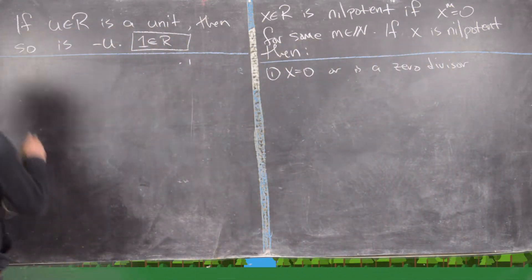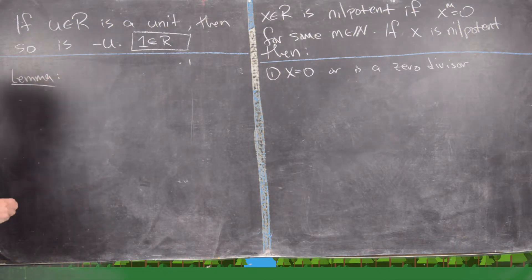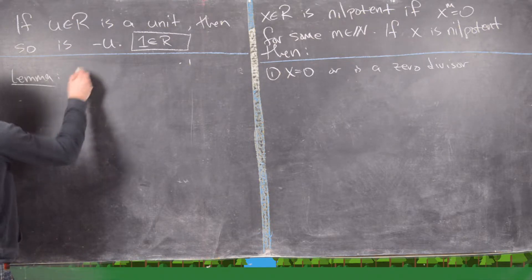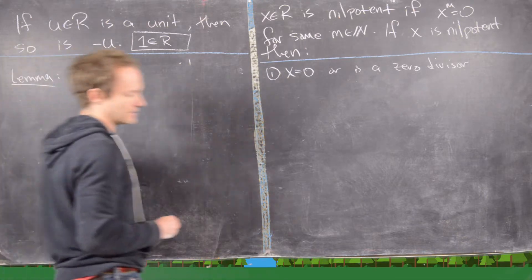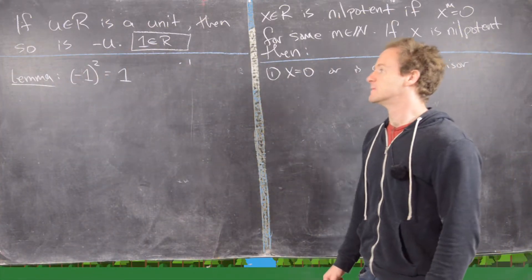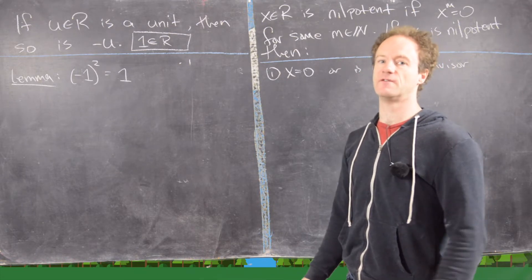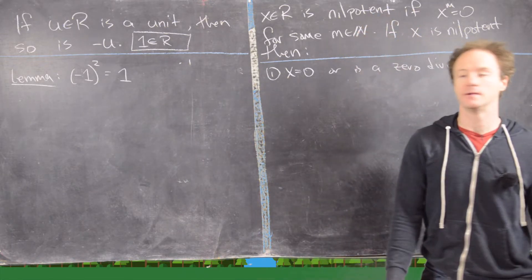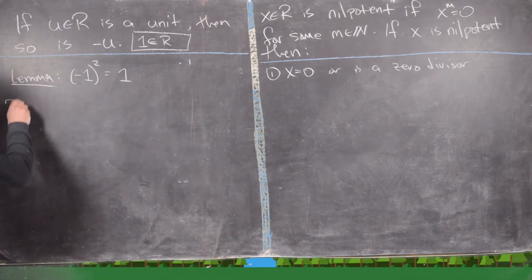In order to do this very properly, we actually need a few lemmas. The first lemma that we're going to need is that if you take negative 1 squared, you should get 1. In other words, if you take the additive inverse of the identity element and you square it, you get 1. And we can prove this in a pretty simple way.